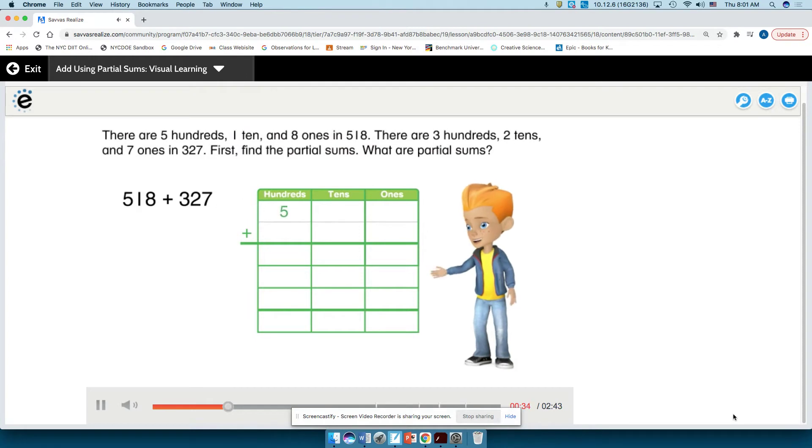There are five hundreds, one ten, and eight ones in 518. There are three hundreds, two tens, and seven ones in 327.